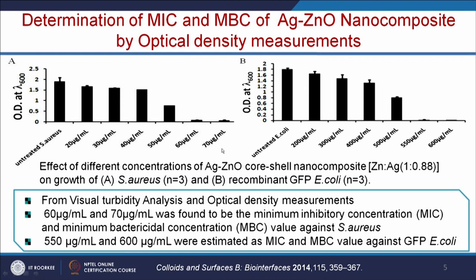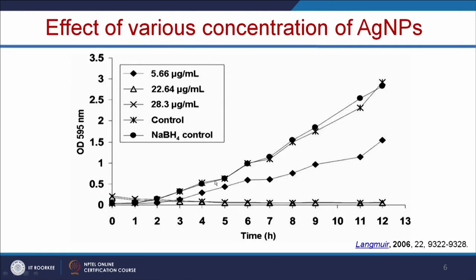In the next slide, this is with respect to different time points. The effect of various concentrations of nanoparticles at different time points — in the control where there is no nanomaterial, the growth is gradually increasing. In this nanoparticle preparation, sodium borohydride was used as a reducing agent. You can see the reducing agent is not toxic — where we added the reducing agent, there is no inhibition of growth. With a low concentration of nano particles (5.66), the growth is gradually decreased. When we use the MIC or MBC concentration, the growth is completely inhibited or arrested.